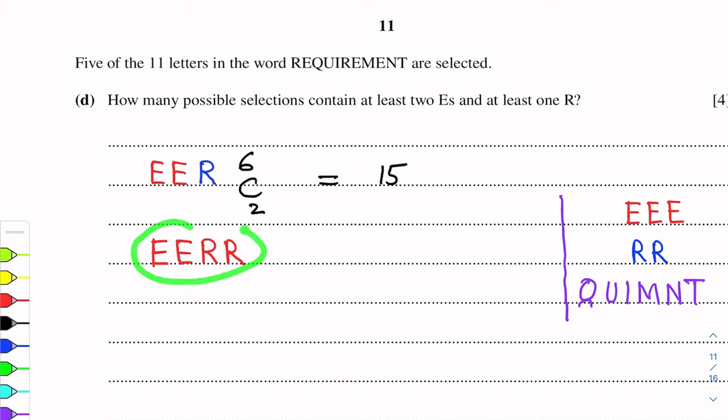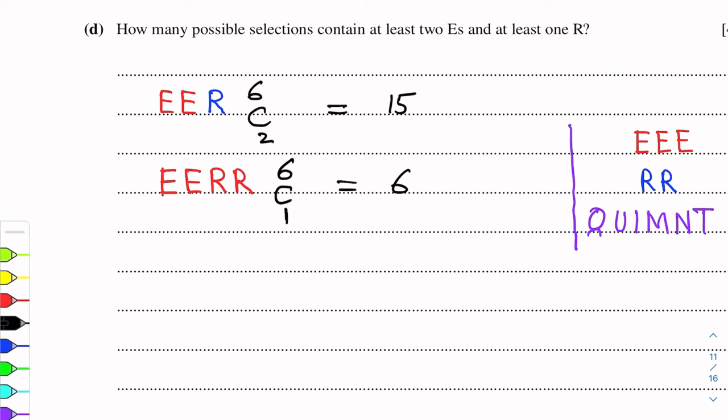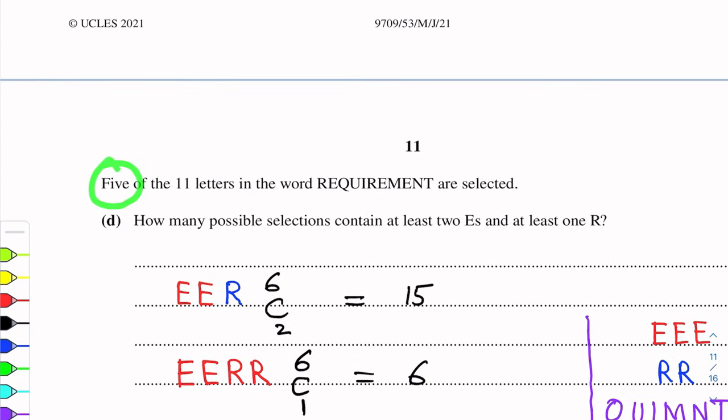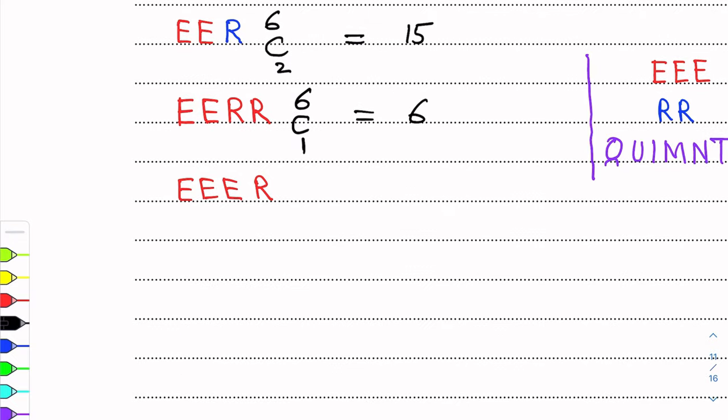Next option is 3 E's, 1 R. At least 2 means 2 or more, so 3 E's is possible. We need 1 more letter from the 6 others. 6 choose 1 equals 6.